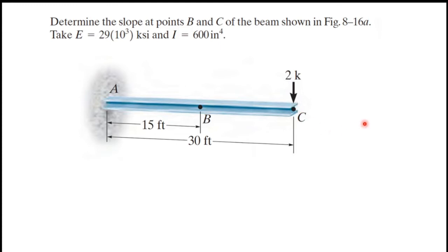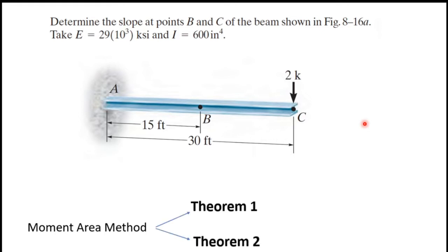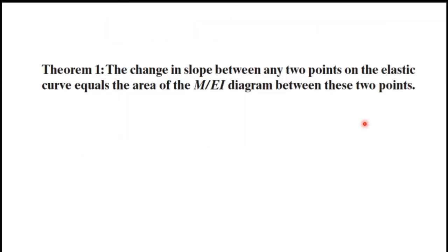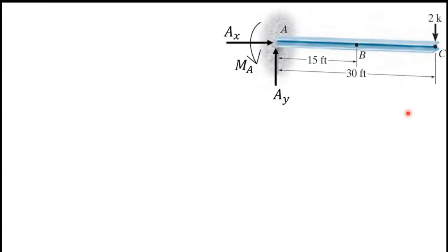Using the moment area method, there are two theorems: Theorem 1 and Theorem 2. In order to find slope we use Theorem 1. Theorem 1 states that the change in slope between any two points on the elastic curve equals the area of the M over EI diagram between these two points.